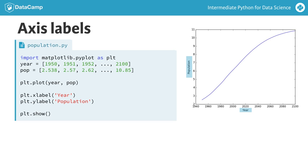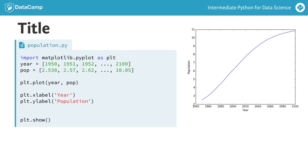We're also going to add a title to our plot, with the title function. We pass the actual title, world population projections, as an argument. And there's a title.